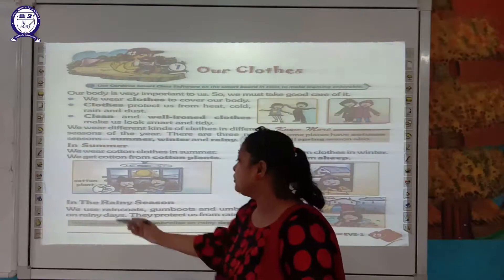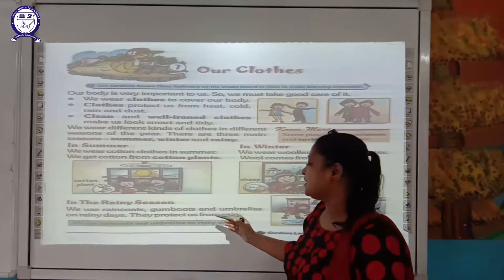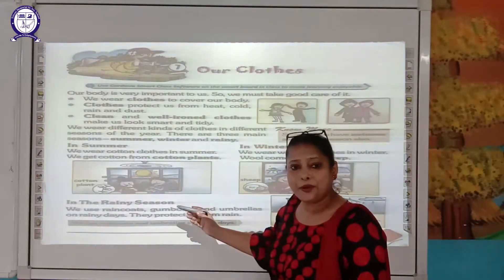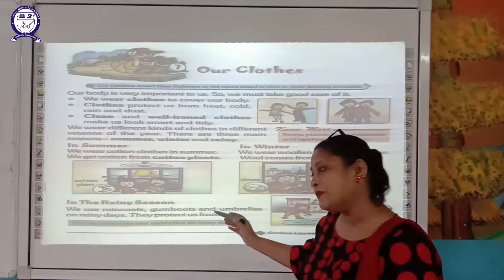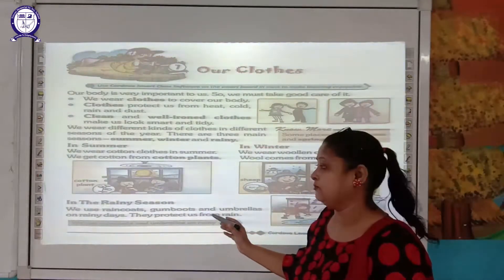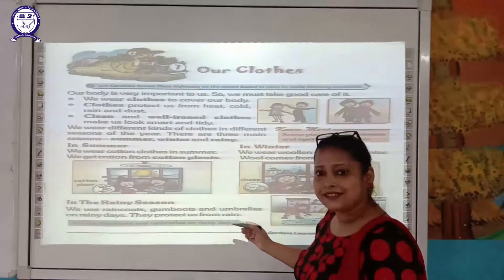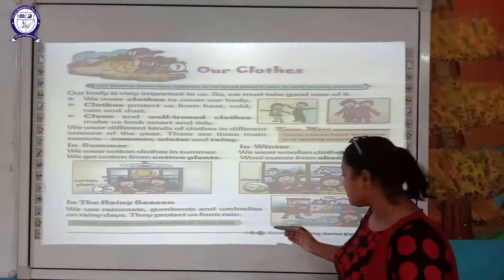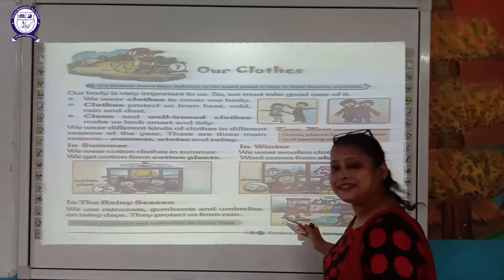In the rainy season, we use raincoats, gumboots and umbrellas on rainy days — they protect us from the rain. We wear clothes that are waterproof so that we don't get wet. You can see a picture of the rainy season here, where students are carrying umbrellas and wearing raincoats and gumboots.